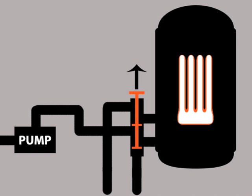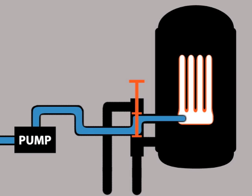To backwash the filter, we'll pull the valve up into the backwash position. Now the water flows in reverse. The water flowing out from the grids releases the DE.